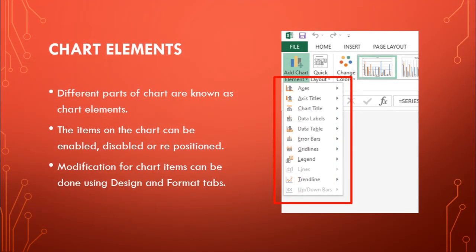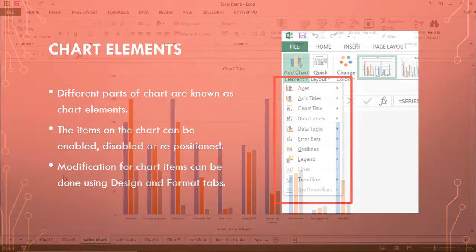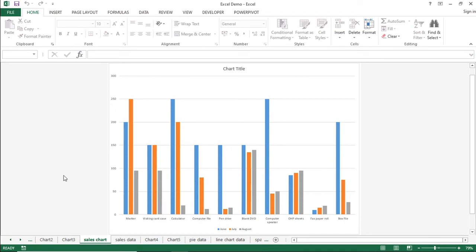Now let us see how to make use of Chart Elements. The Chart Element option is present in the Design tab. Different parts of a chart are known as Chart Elements. The items on the chart can be enabled, disabled, or repositioned. We will go through the Chart Elements options one by one.